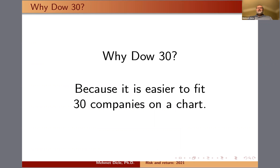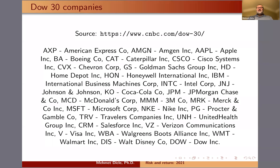We are using DOW30 instead of our usual S&P 500 because it's much easier to include and fit 30 companies on a chart and still be able to read it, compared to 500 companies included in the S&P 500. Even though I download the daily prices from Yahoo Finance, the source of the list of companies included in the DOW30 is actually CNBC. These are the companies that are included in the DOW30.